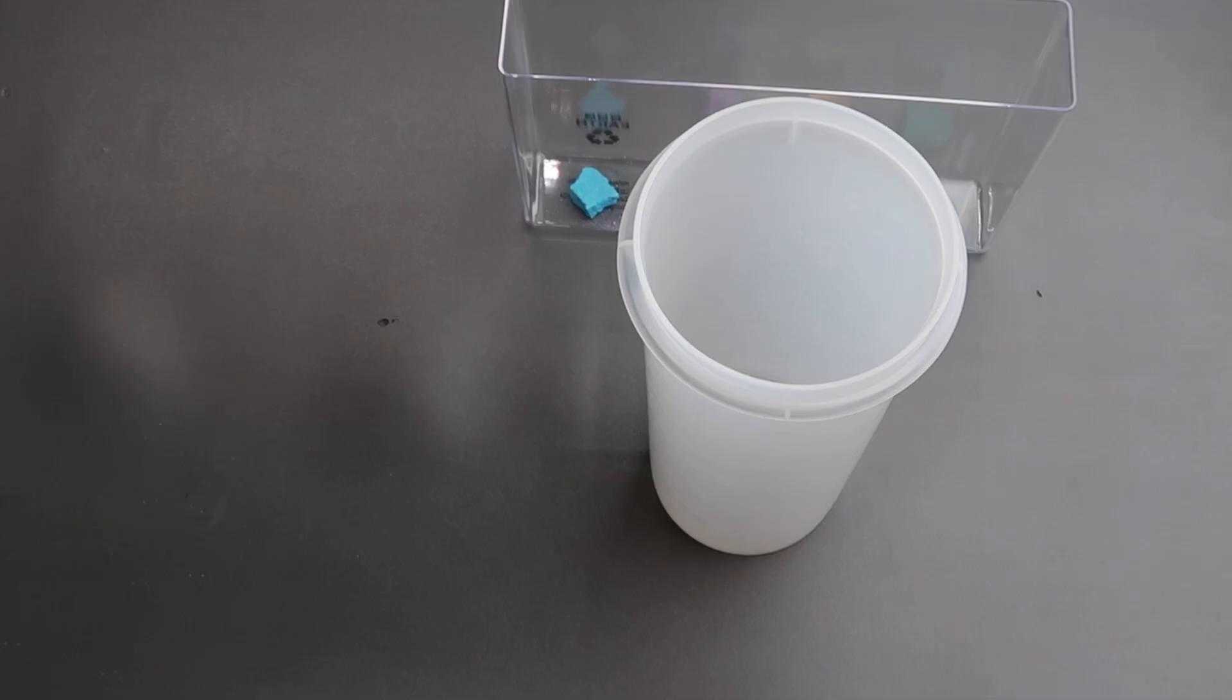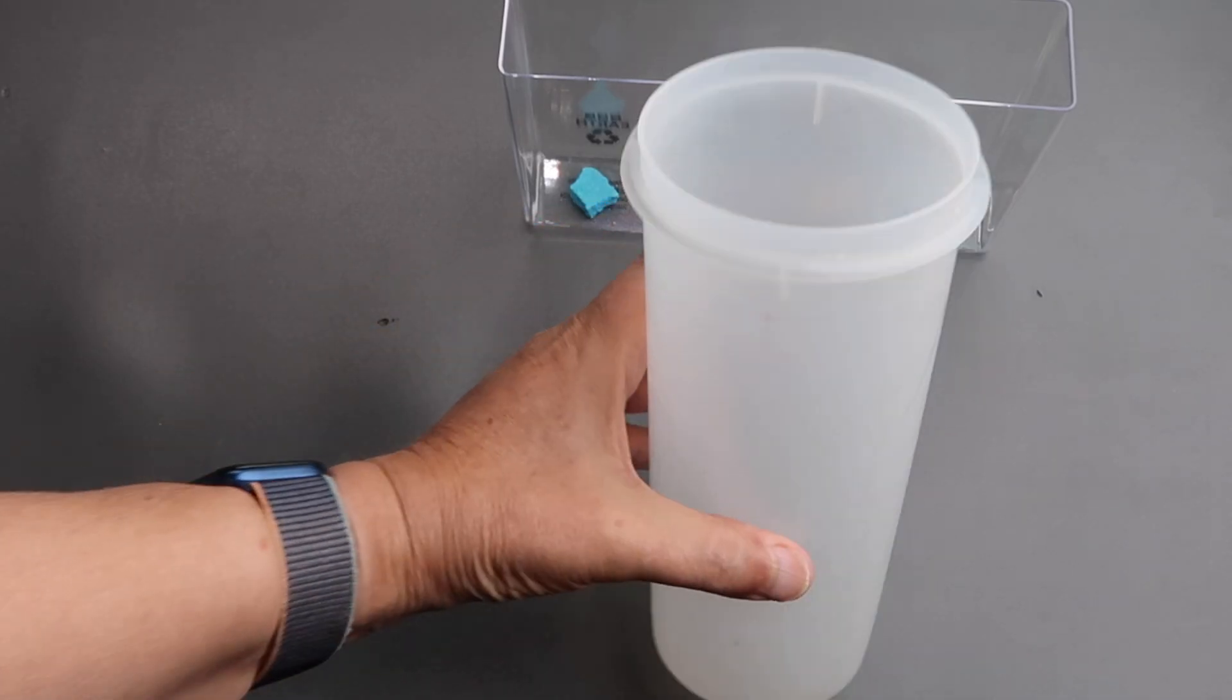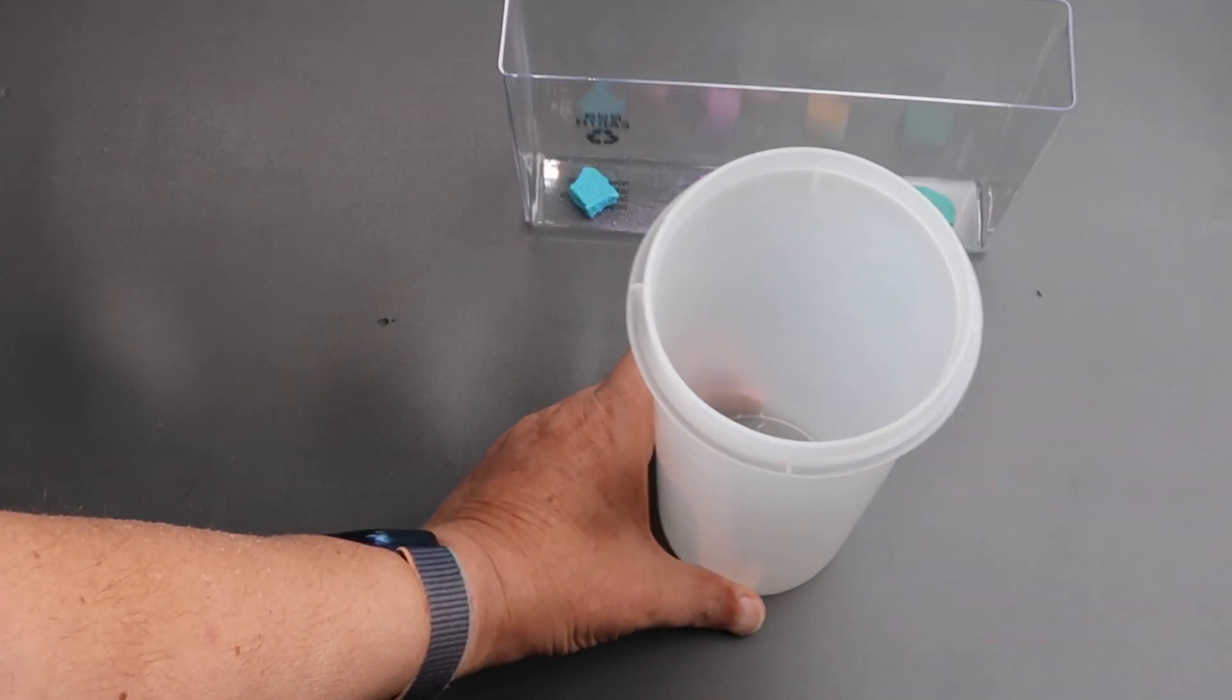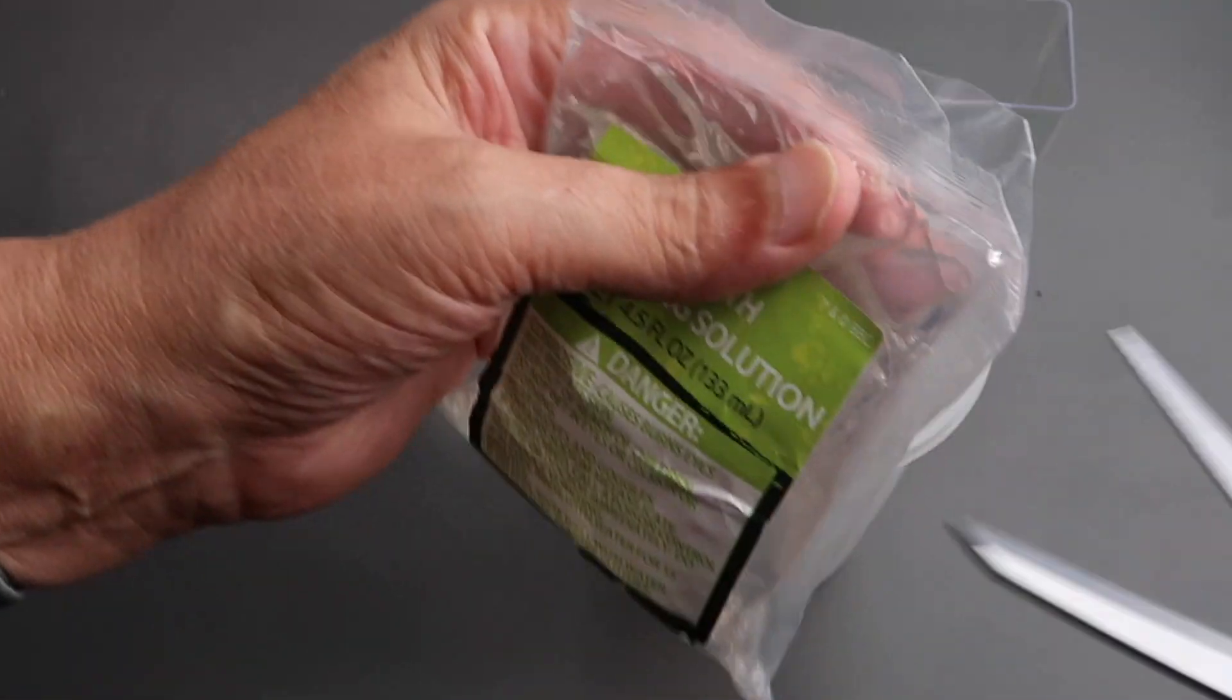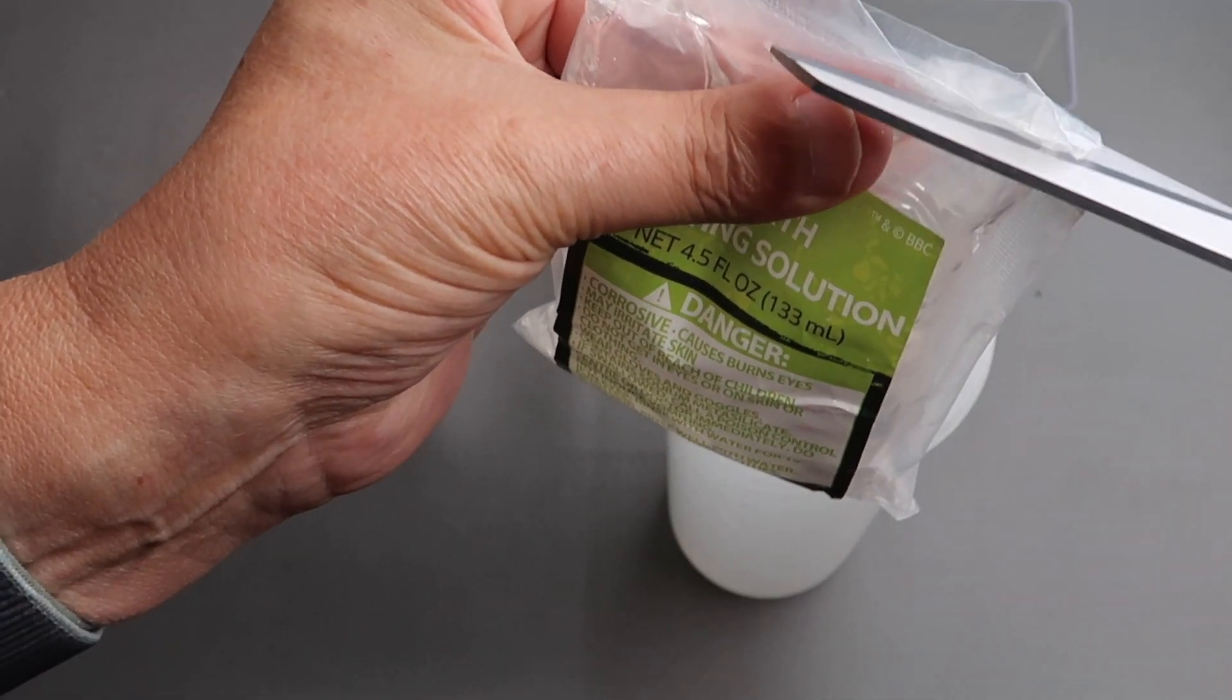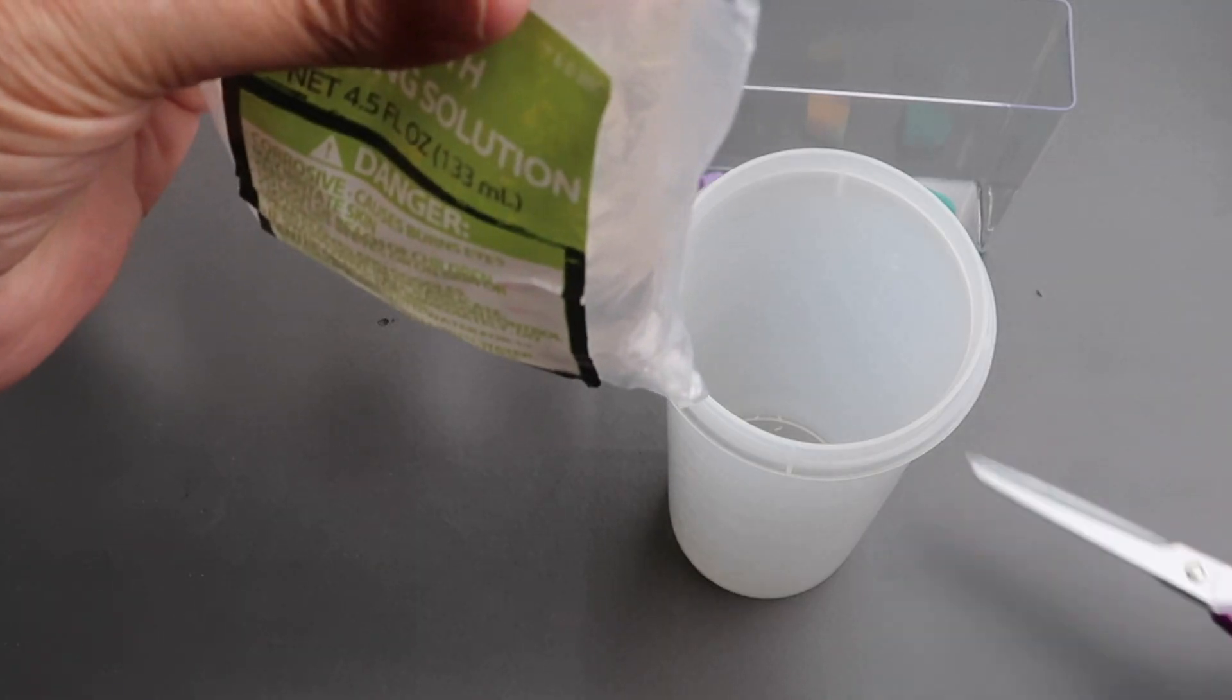The next step is to make the growing solution. So I've got this large plastic beaker. They suggest a glass one, let's try plastic. The first thing to do is to take both these bags of solution and pour them into this.